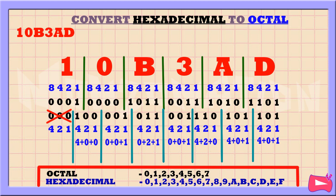4 plus 1 is 5 (first group). 4 plus 1 is 5 (second group). 4 plus 2 is 6 (third group). 1 corresponds with 1, so it becomes 1 (fourth group). 2 plus 1 is 3 (fifth group). 1 corresponds with 1, so it becomes 1 (sixth group). 4 corresponds with 1, so it becomes 4 (last group).